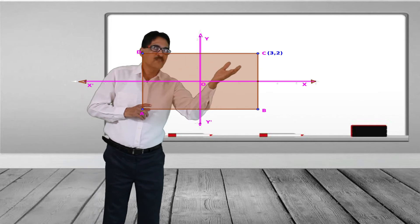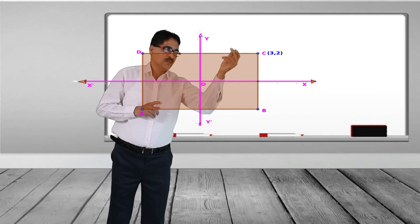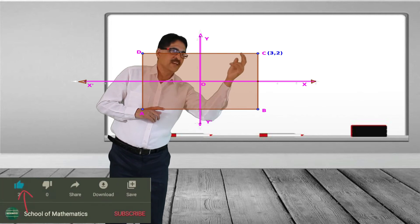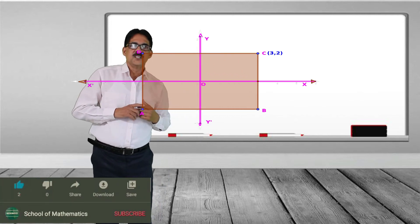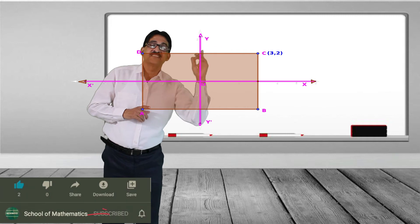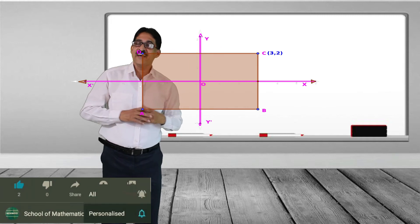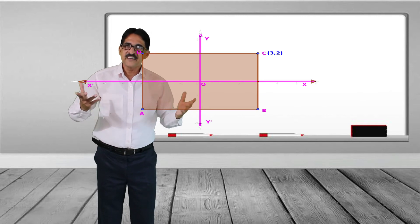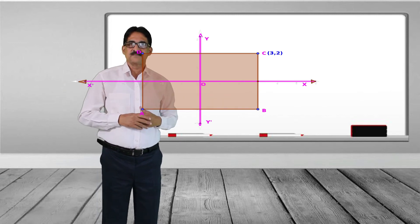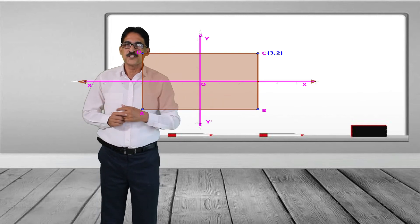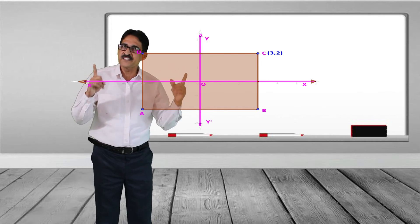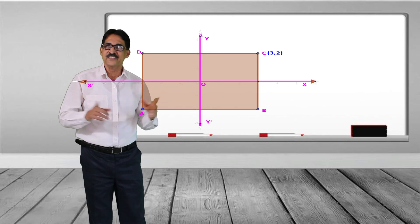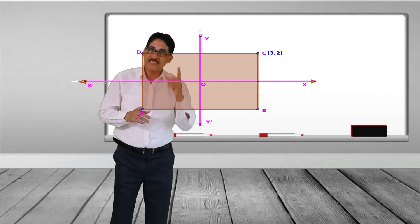C is given as (3, 2) — x-coordinate is 3 and y-coordinate is 2. Notice that the axes are not marked here. That is the peculiarity of this problem: without the axes being marked, we should find the coordinates of A, B, C, and D. The condition given is that the sides are parallel to the axes.